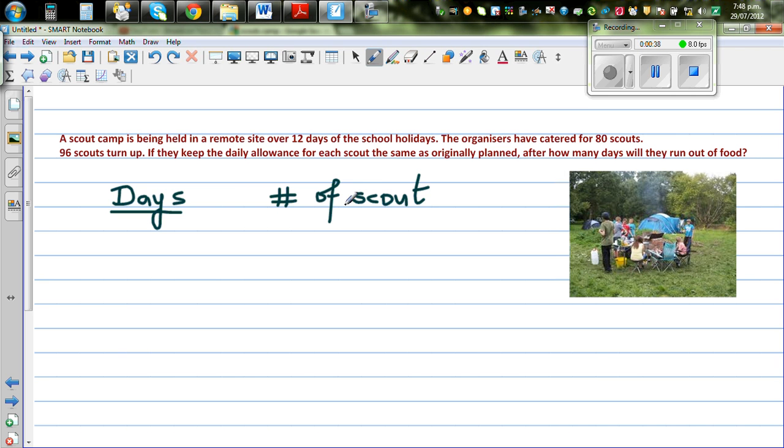As planned, what they are saying is, if this was planned for 12 days camp and there was enough food for 80 Scouts, now there are 96 Scouts turn up. This answer should be something less than 12.